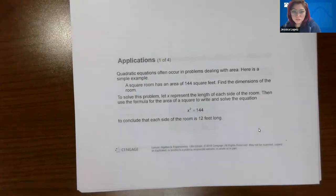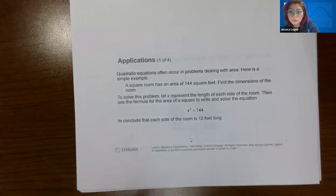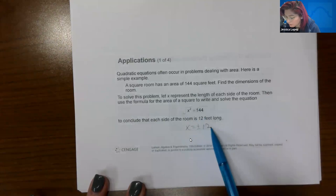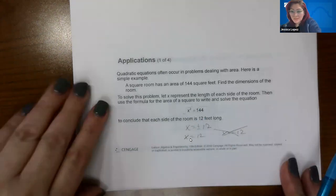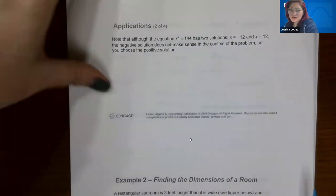Quadratic equations often occur in problems dealing with area. Here's a simple example: a square room has an area of 144 square feet — find the dimensions. If x represents the length of each side, then x² = 144. Taking the square root of both sides gives x = ±12. But x = −12 doesn't make sense because a length can't be negative, so the room is 12 feet on each side.